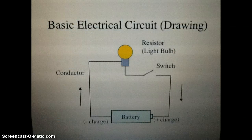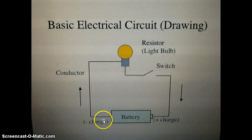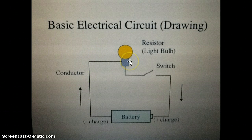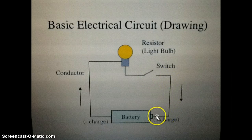Here is a basic electrical circuit drawing. The battery is the source making electricity. Wires conduct electricity from the battery to the light bulb. Look carefully at the switch — it is open. When a switch is open, electricity cannot flow all the way back to the battery. Therefore, it is an open circuit.